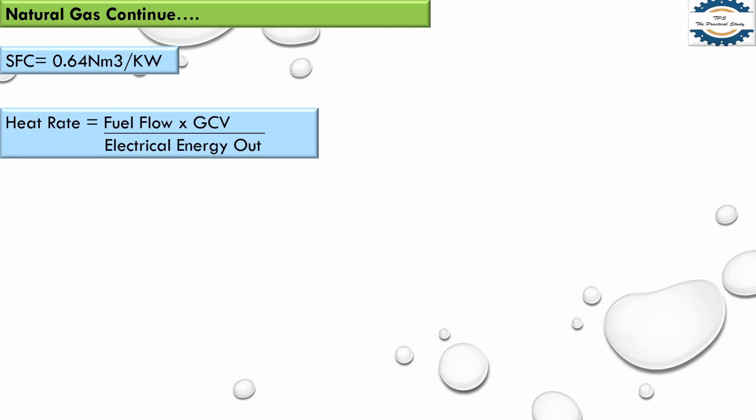Now we will calculate the heat rate, whose formula is fuel flow multiplied by GCV divided by electrical energy output. GCV is the gross calorific value — it is a constant for each fuel and depends on fuel quality. The greater the quality of fuel, the higher the GCV value. You can find your GCV value from your fuel supplier.